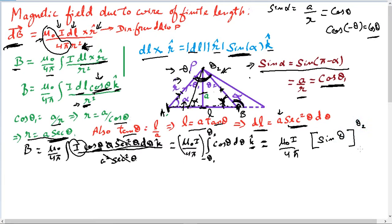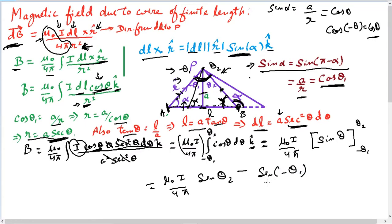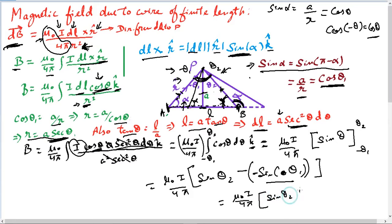So I get mu naught I over 4 pi times sine theta, evaluated by substituting theta two and negative theta one. This gives mu naught I over 4 pi times the quantity sine of theta two minus sine of negative theta one. Since sine of negative theta is minus sine theta, this becomes mu naught I over 4 pi times the quantity sine of theta one plus sine of theta two.